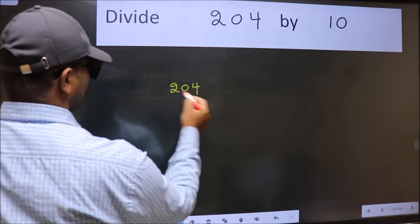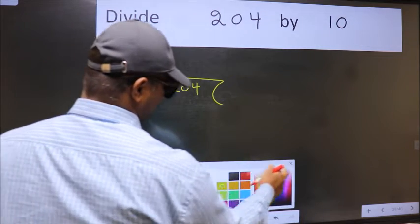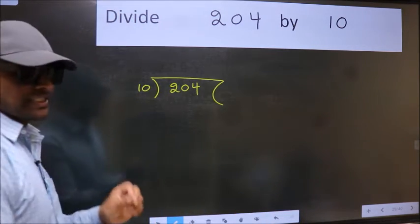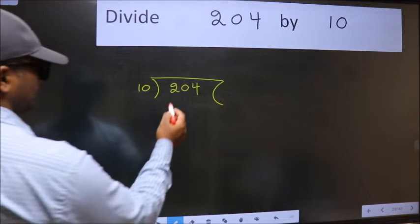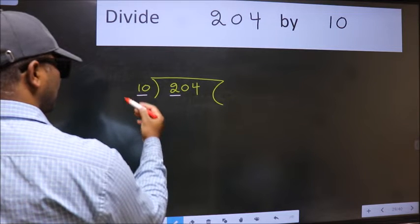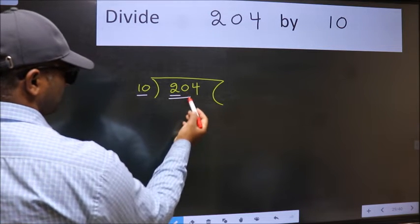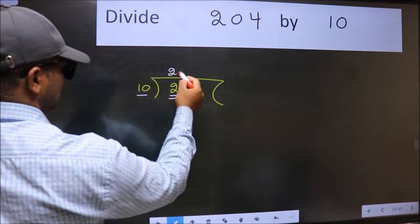204 here. 10 here. This is your step 1. Next, here we have 2 and here 10. 2 is smaller than 10. So take 2 numbers, 20. When do we get 20 in 10 table? 10 twos, 20.